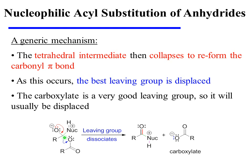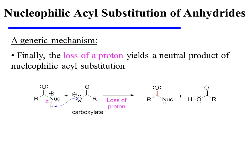The carboxylate is a very good leaving group, so it will usually be displaced. Lastly, a proton is lost so as to afford a neutral product. This is the result of nucleophilic acyl substitution, and in this case, the byproduct is a carboxylic acid.